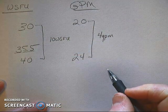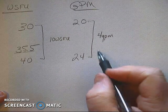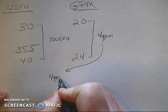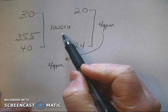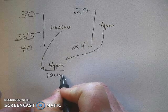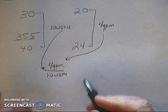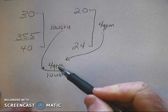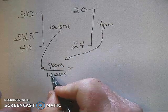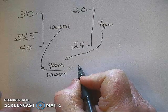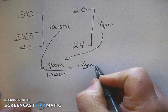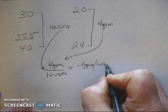With those two numbers I'll set up an equation. I'll take my 4 GPM and put it here and then I will take my 10 WSFU and put it right here and I'm going to divide the 4 GPM by the 10 WSFU. Now I'm going to label it gallons per minute per one WSFU.